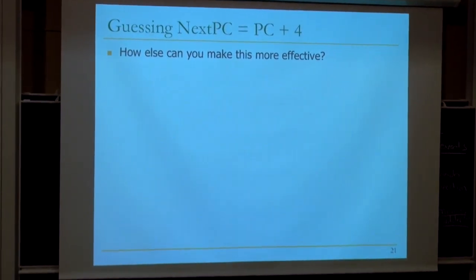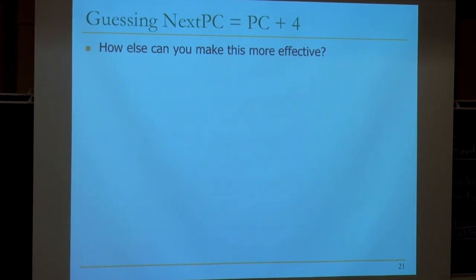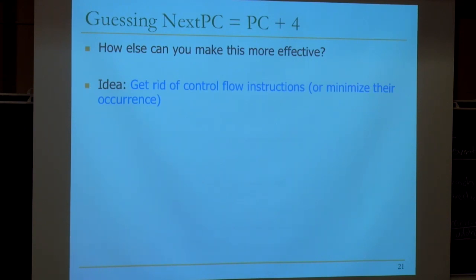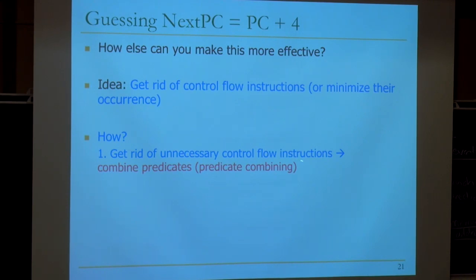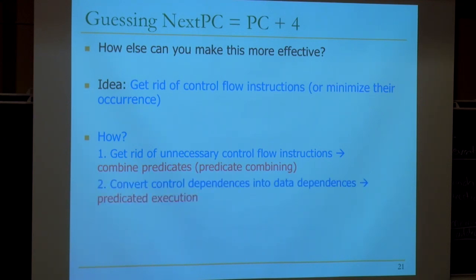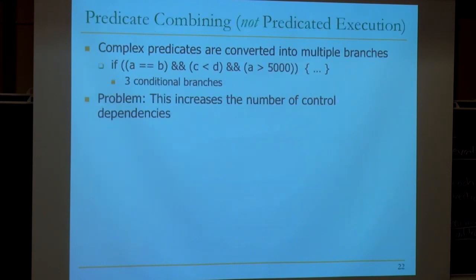How else can we make prediction more effective? Another approach is to eliminate control flow instructions. One way is predicate combining. You can also use conditional instructions — predicated execution — which converts control dependences to data dependences. But before that, let's look at predicate combining: you can combine complex predicates to feed a single branch instead of generating three conditional branches for a complex condition like 'if A equals B and C less than D and A greater than 5000.'